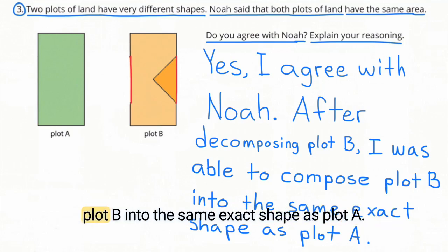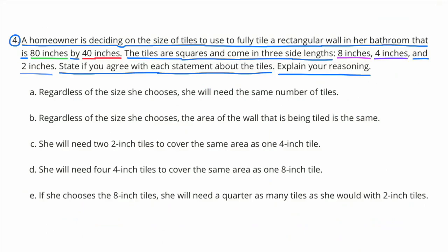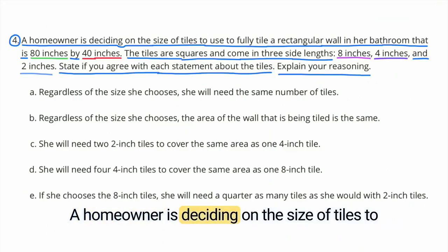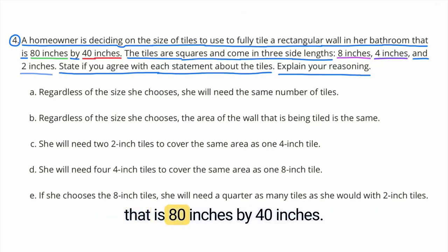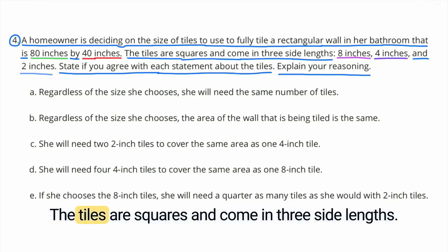I was able to compose plot B into the same exact shape as plot A. Number 4. A homeowner is deciding on the size of tiles to use to fully tile a rectangular wall in her bathroom that is 80 inches by 40 inches. The tiles are squares and come in three side lengths.